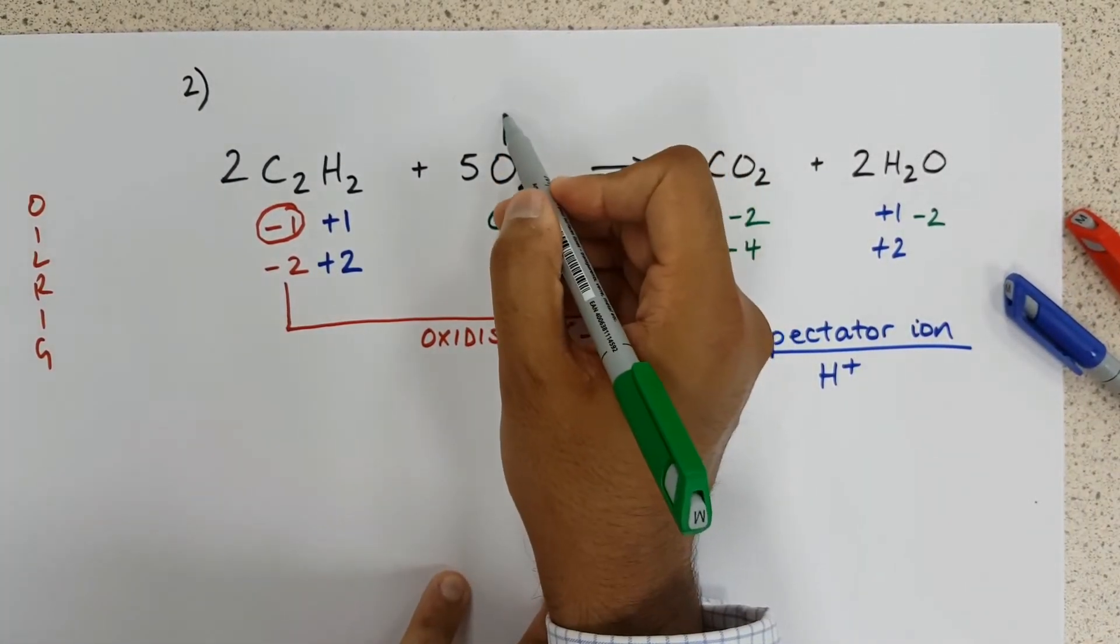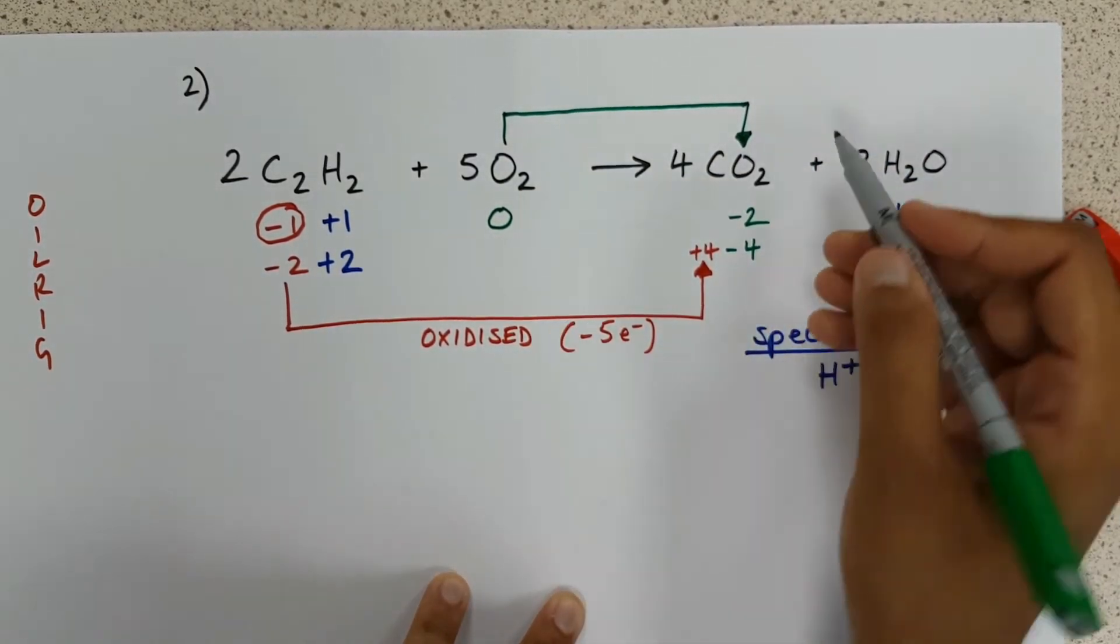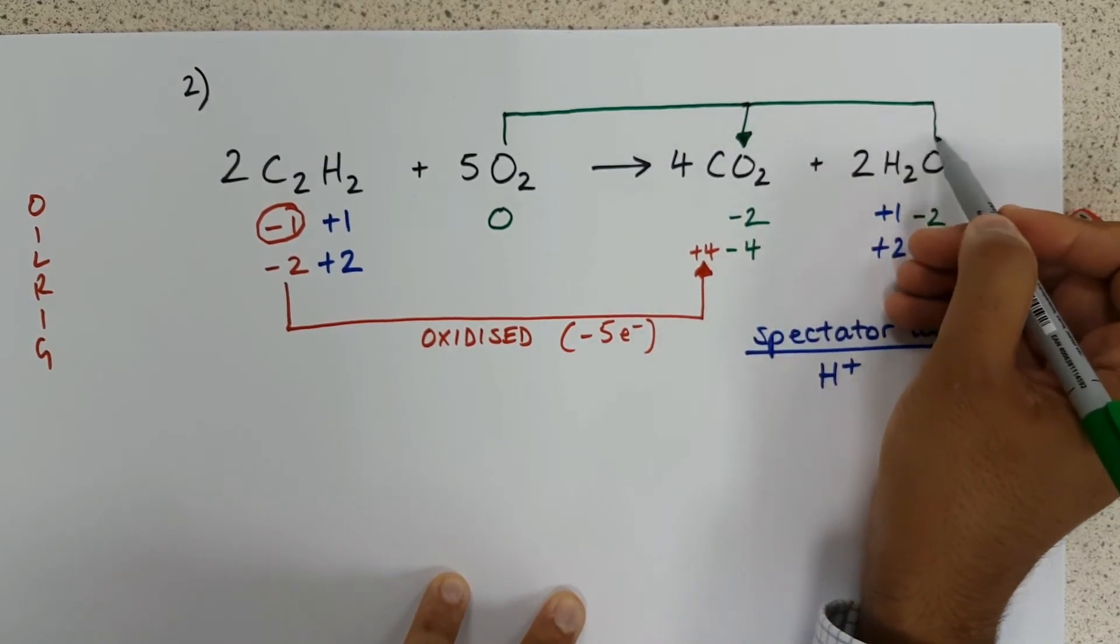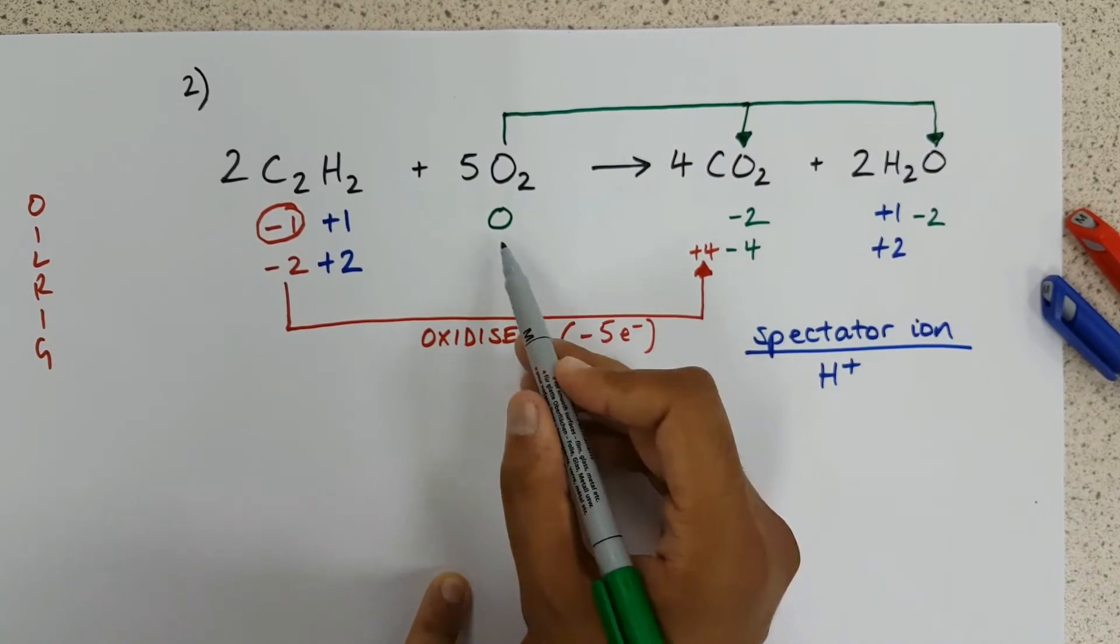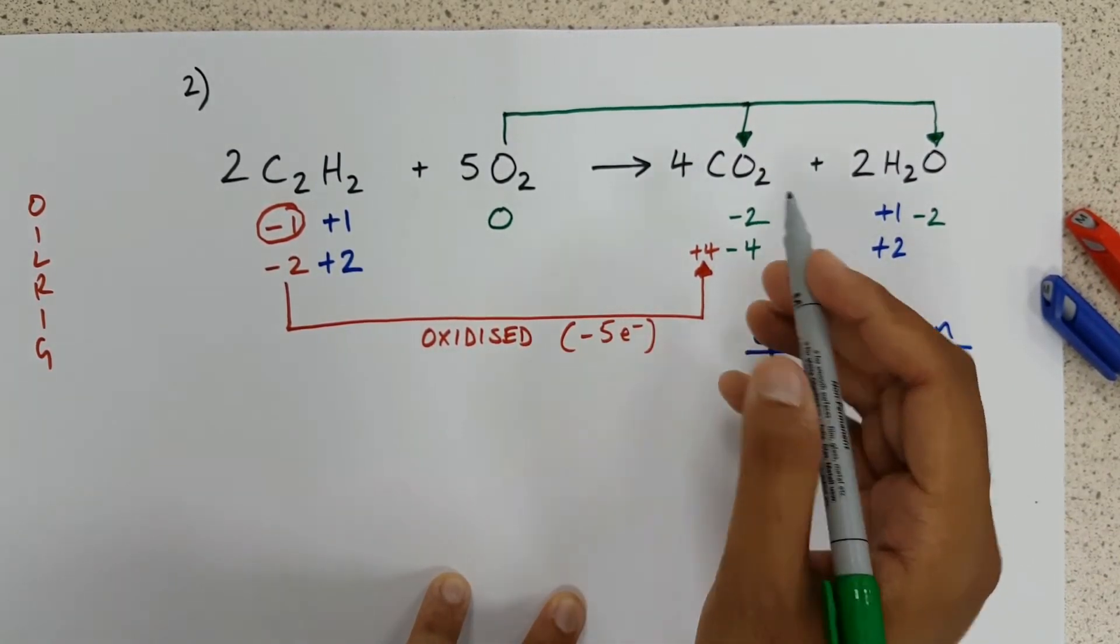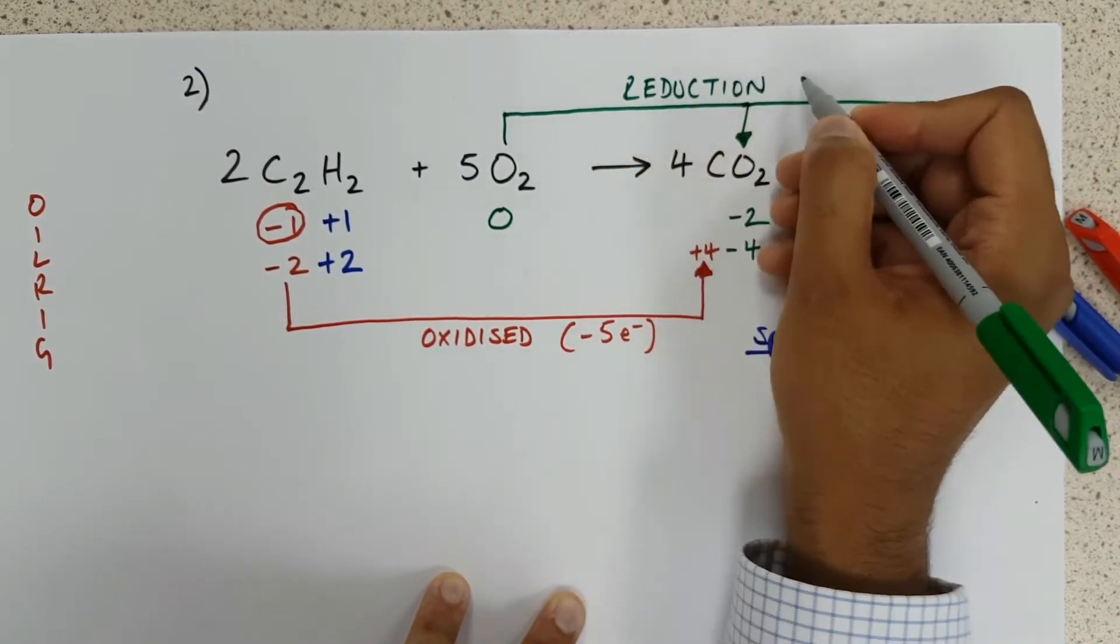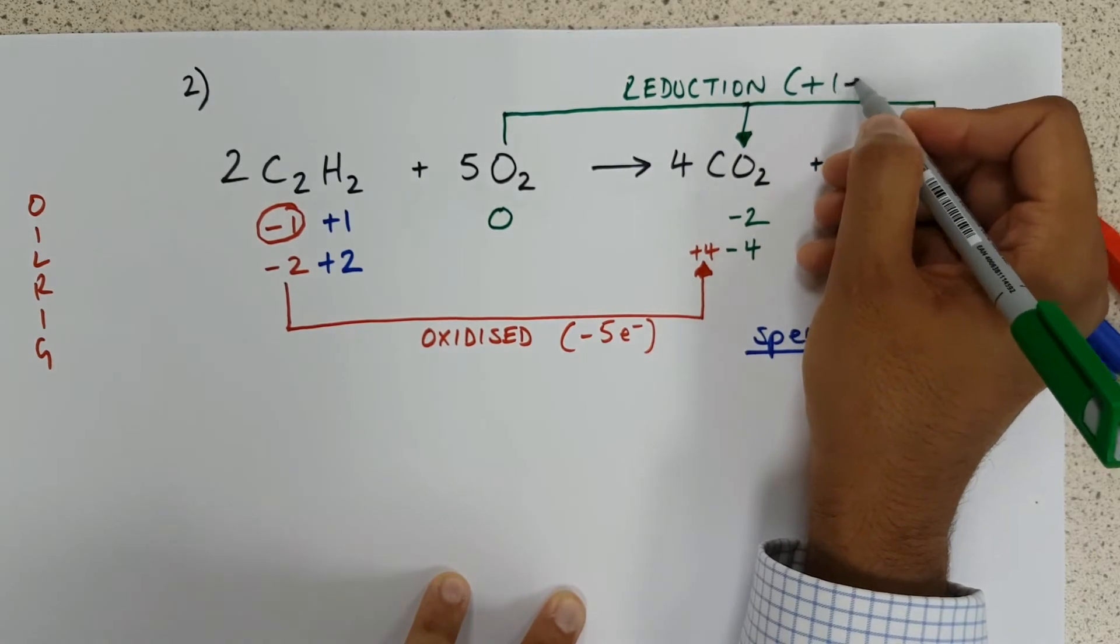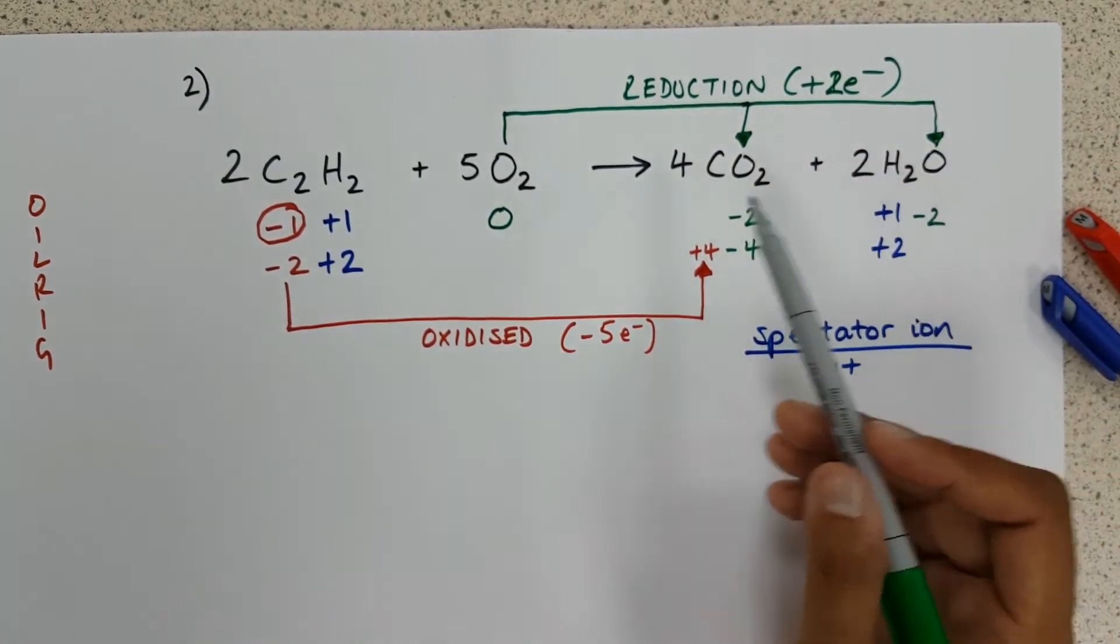And finally, oxygen has gone from an oxidation state of zero to minus two. And we should also be aware that there is an oxygen over here, which is minus two. That signifies a gain of electrons, which we know is reduction. And in fact, two electrons per oxygen.